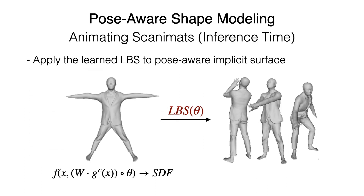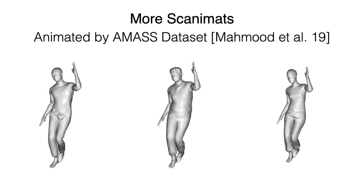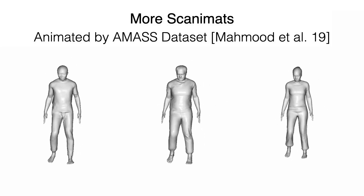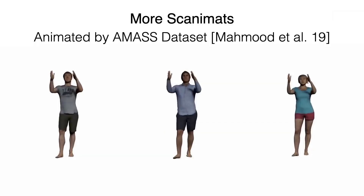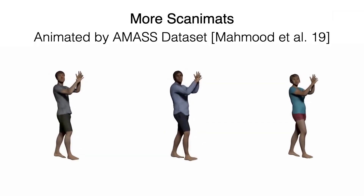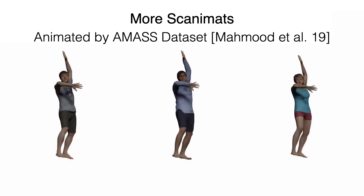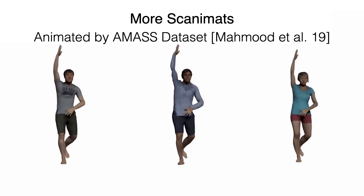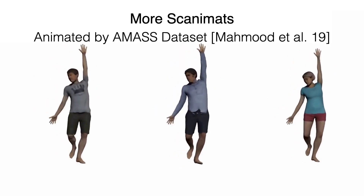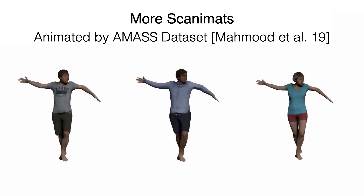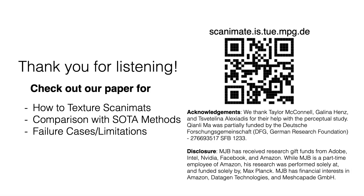Because we use SMPL as a foundation, we can re-pose and animate avatars using SMPL pose parameters. Here we show examples of animated Scanimates using a motion sequence. In conclusion, Scanimate enables learning of high-fidelity clothed avatars directly from raw scans for the first time. Please check out our paper for how to texture Scanimates, comparison with state-of-the-art methods, and discussion on failure cases. Thank you for listening.